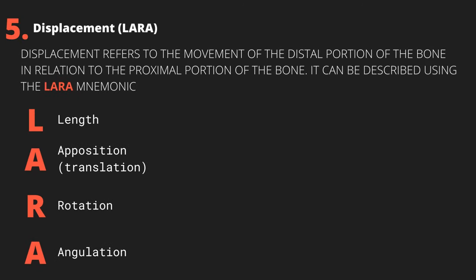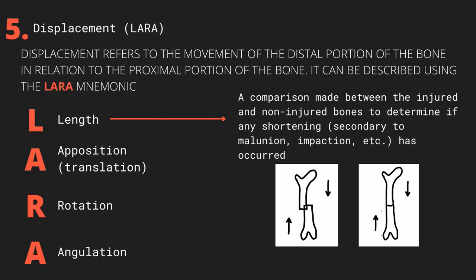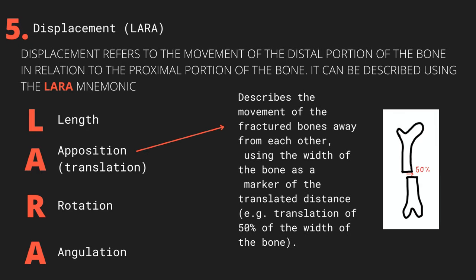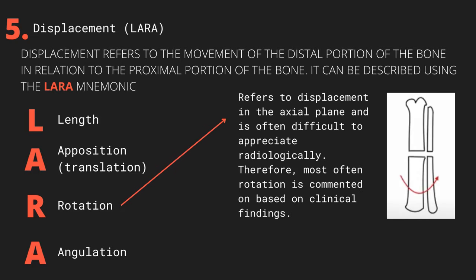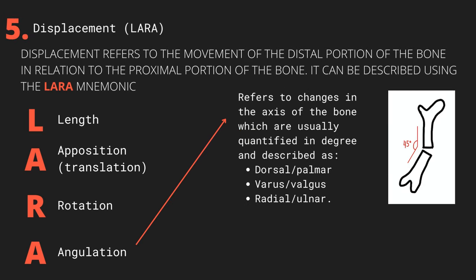The fifth consideration of the bone portion relates to displacement, which describes how the distal part of the bone has moved relative to the proximal portion, reported in each possible plane of movement. LARA is a useful mnemonic: L refers to the net change in length, or degree of shortening, of the injured bone compared to the uninjured side, usually due to malunion or impaction. A denotes apposition, the movement of the edges of fractured bones away from each other in the horizontal plane, quantified as a percentage of total bone width. R refers to rotation — displacement in the axial plane — which is more appropriately assessed by clinical rather than radiological means. The final A relates to angulation, the change in axis of the fractured bone pieces relative to one another, quantified in degrees with descriptors such as dorsal vs. palmar, varus vs. valgus, or radial vs. ulnar.